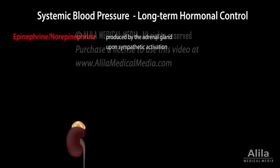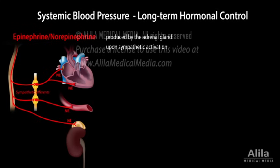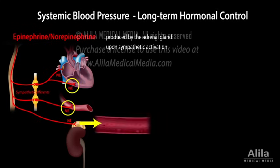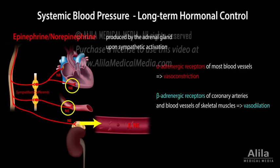Epinephrine and norepinephrine are hormones produced by the adrenal gland upon sympathetic activation. Unlike the norepinephrine released as a neurotransmitter, these are hormones carried by the bloodstream, so they have widespread impacts and longer-term effects. By binding to different receptors, they cause vasoconstriction in most organs but vasodilation in the heart and skeletal muscles, thus directing blood flow to the heart and muscles during exercise.